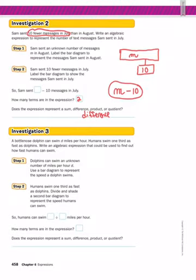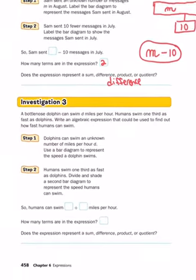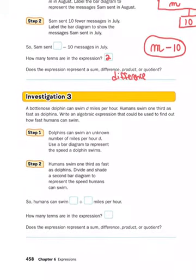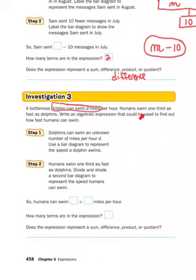Now we're going to go down to Investigation 3. A bottlenose dolphin can swim d miles per hour — that's how fast a dolphin can swim. And humans swim one-third as fast as dolphins. Write an algebraic expression that could be used to find out how fast humans can swim.